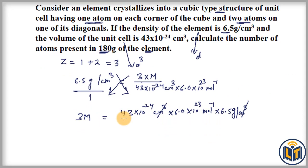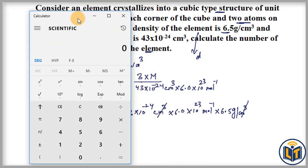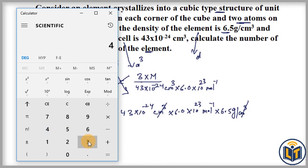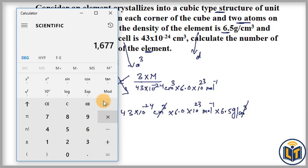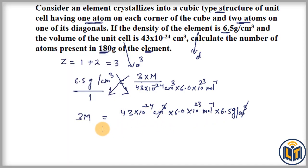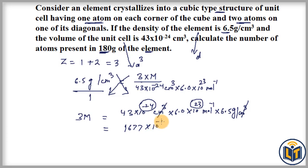Now we do the calculation. We multiply the numbers: 43 × 6.0 × 6.5 = 1677. For the exponents, we add them in multiplication: 10²³ × 10⁻²⁴ = 10⁻¹. So we have 3M = 1677 × 10⁻¹. Dividing both sides by 3, we get atomic mass M = 1677 × 10⁻¹ divided by 3.